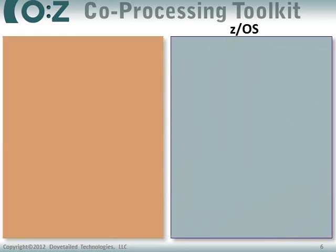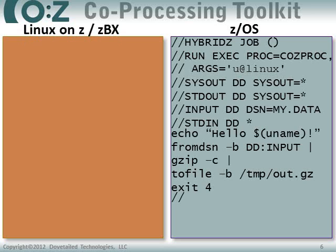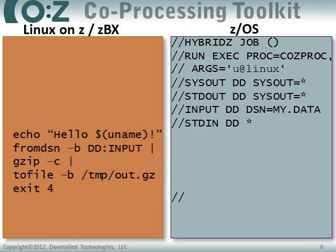To make hybrid batch processing work, we need a ZOS system shown on the right, a Linux system shown on the left, and a job. This job consists of a single step which invokes CozyProc — the Cozy Launcher — and the ARG statement tells the Cozy Launcher where to launch the target program, which is a user ID at some remote Linux system. There are four DDs of interest: Sysout, which is our standard sysout; Standard Out, which is our remote system's standard out stream redirected back to ZOS; an Input DD designating the data we want to compress from ZOS; and the Standard In DD, which is the program we wish to run on the remote system. The launcher sets up this redirection of the standard streams and launches the program on the remote Linux system.